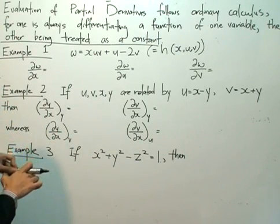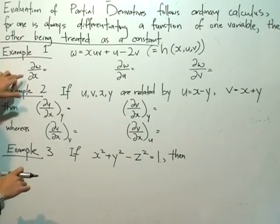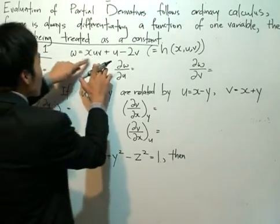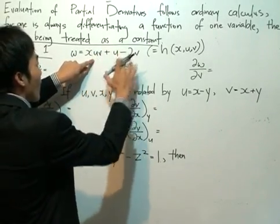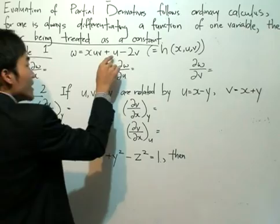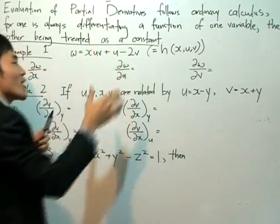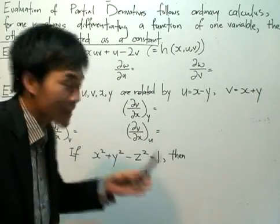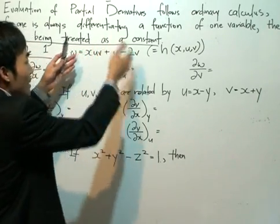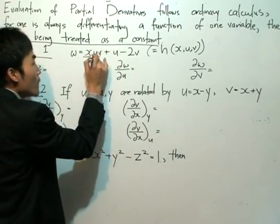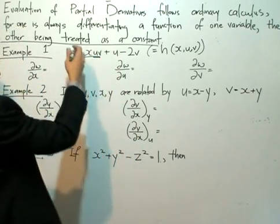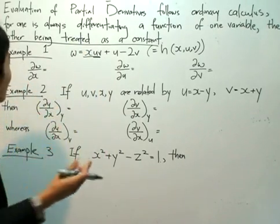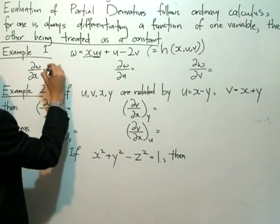First, let's partially differentiate w with respect to x — written as partial w over partial x. I have x here, and there's no x anywhere else in the remaining terms. If u and v are treated as constants, and I partial differentiate a constant with respect to x, I get zero. There's no x term in those parts, so they contribute zero. When I differentiate a constant multiplied by x, I simply get the constant itself. So the answer is uv.